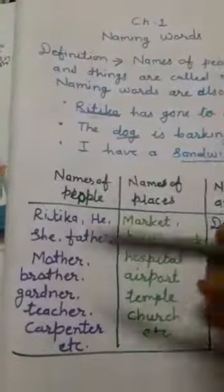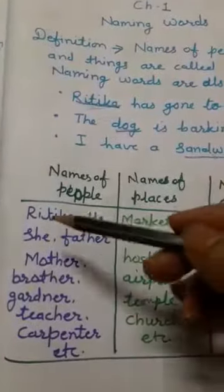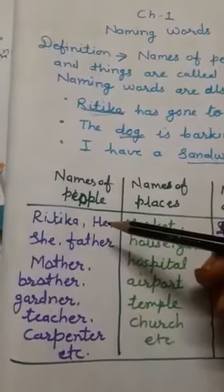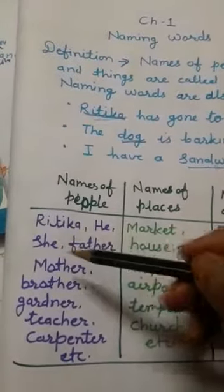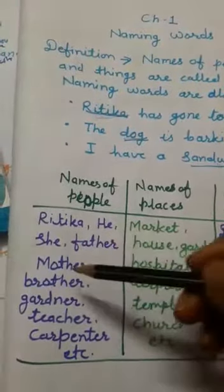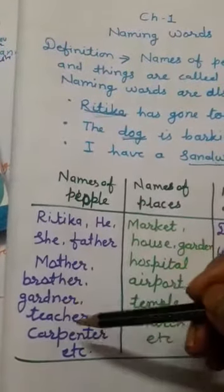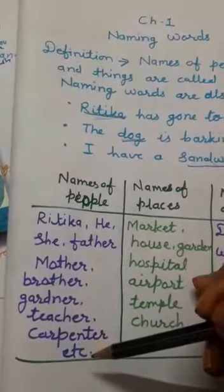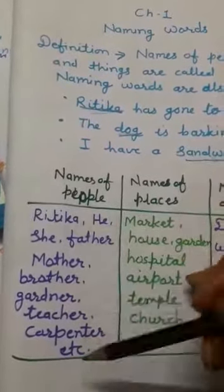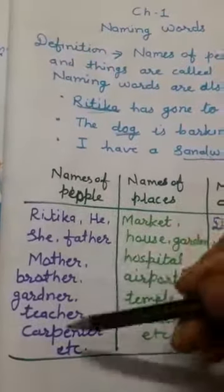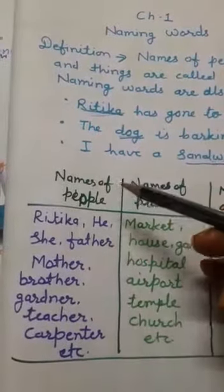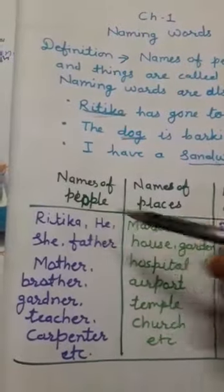Now some examples are here. Names of people: Ritika, father, mother, brother, gardener, teacher, carpenter — these are examples of names of people.